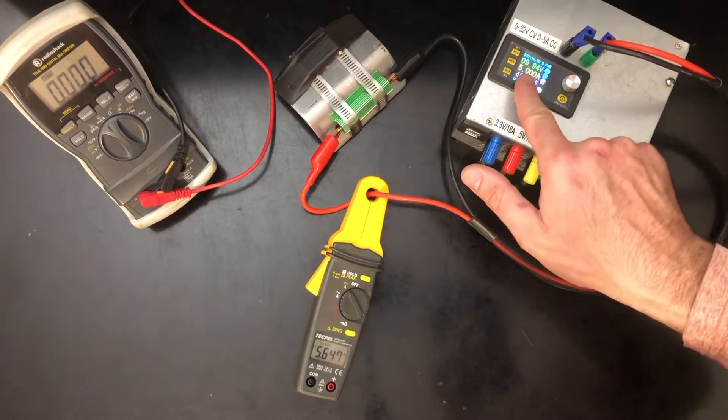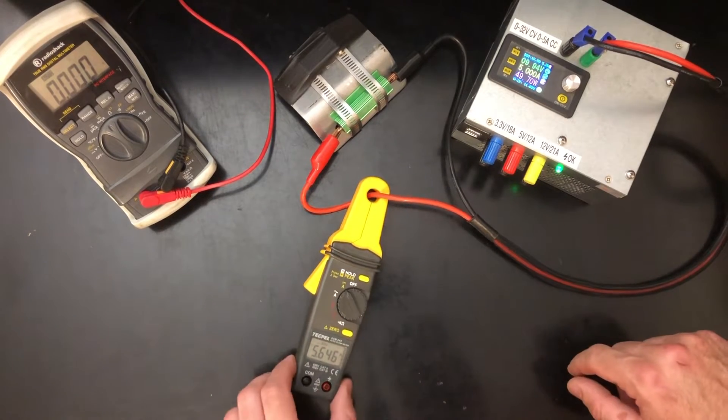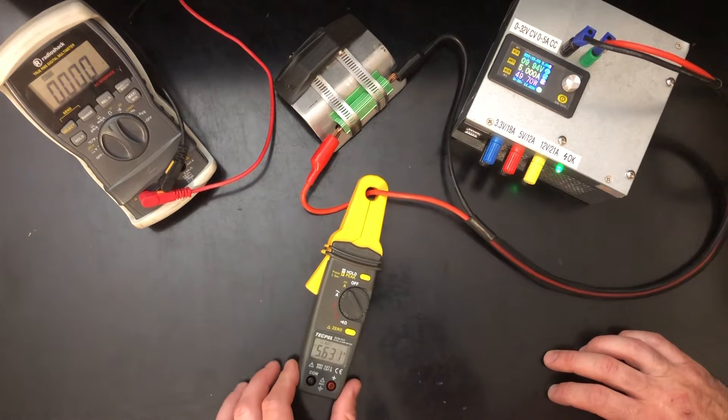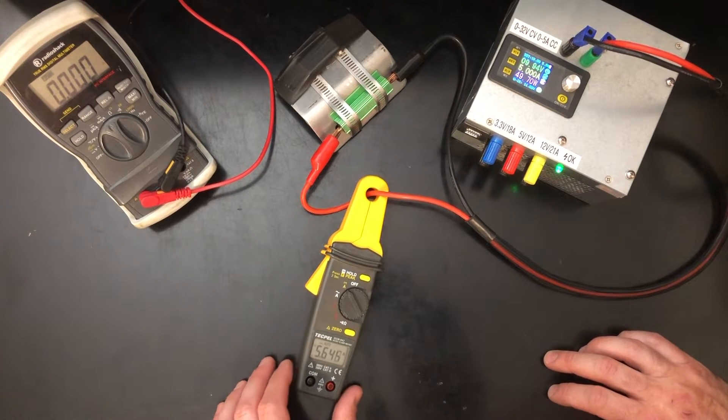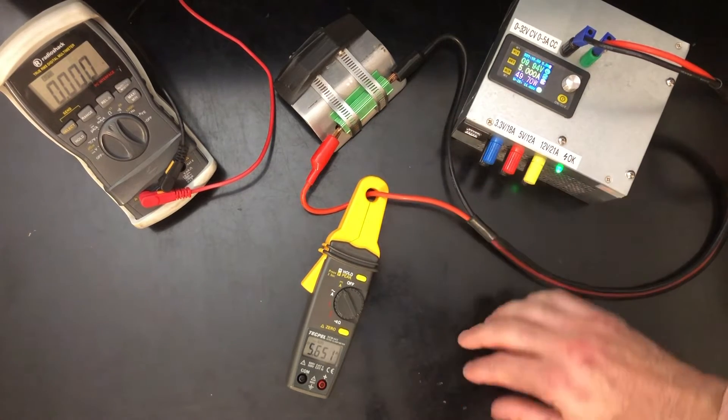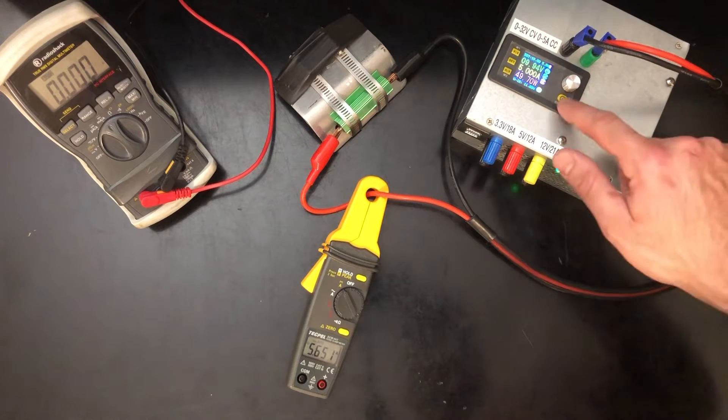There we are, there's exactly 5 amps according to this meter, and what do we have on here? 5.6, depends, but it changes around, but about 5.630 amps. In other words, the base level current that is always reading is just being added on top to the actual current that's flowing through it.